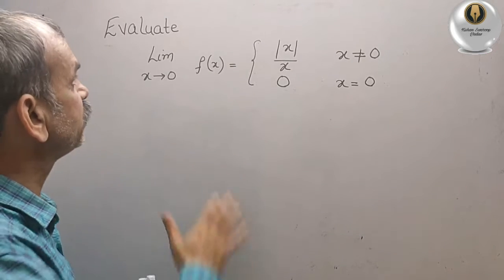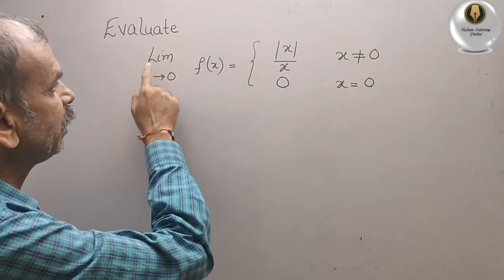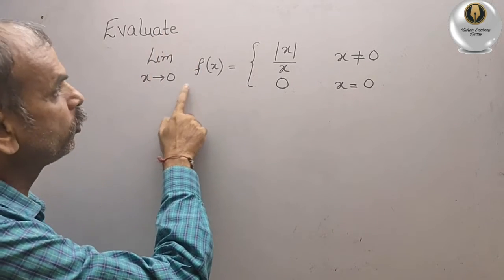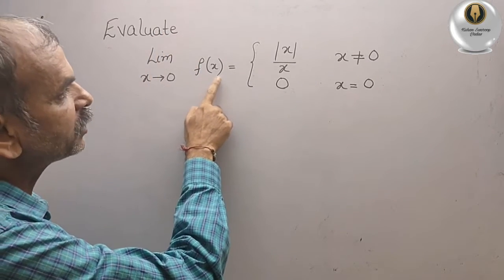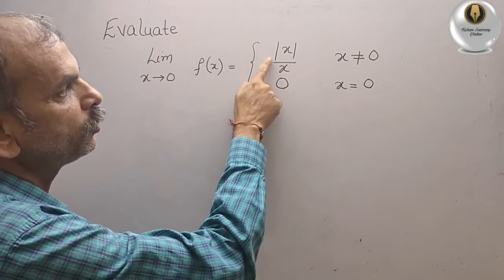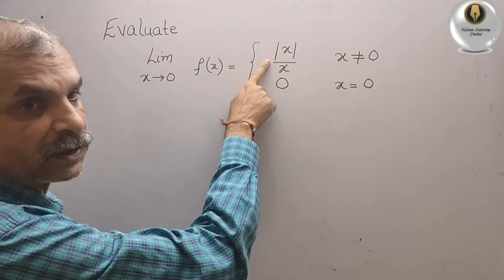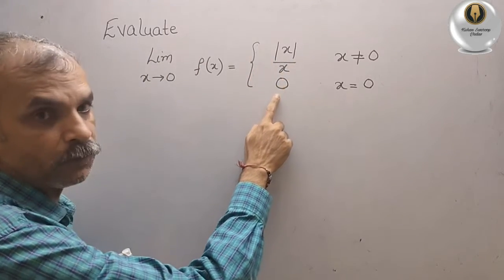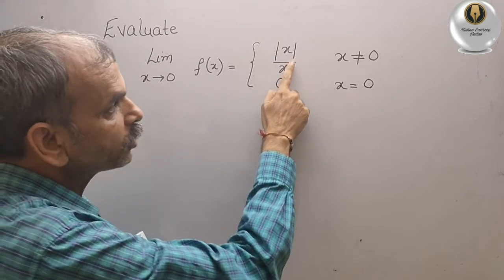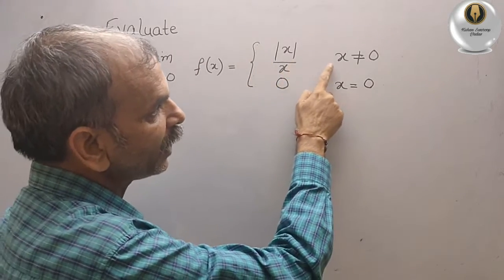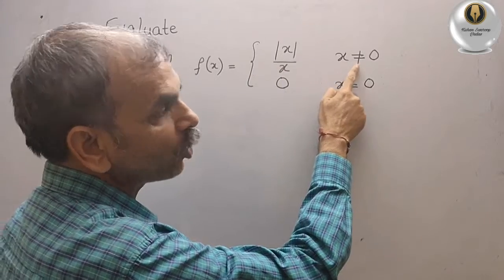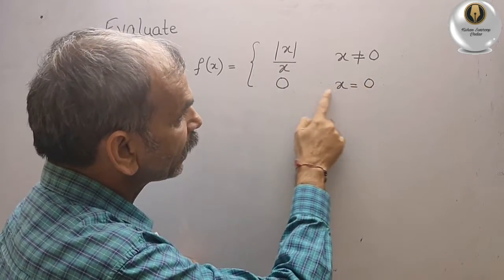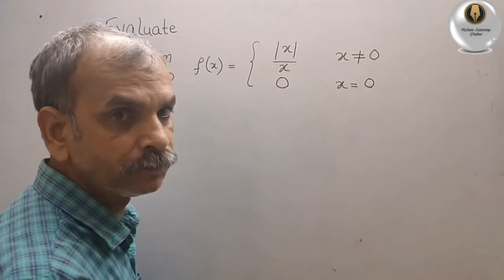The question is: evaluate the limit as x tends to 0 of f(x), where f(x) equals |x|/x for x not equal to 0, and 0 for x equal to 0.